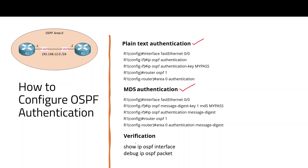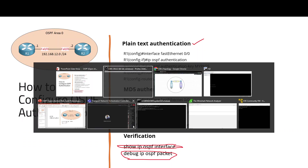We need to use the command 'show ip ospf interface', then we use 'debug ip ospf packet' and 'debug ip ospf hello'. Then we use the password and check for a mismatch. If you don't have any matching reason, your neighbor will be down. We can configure it quickly.